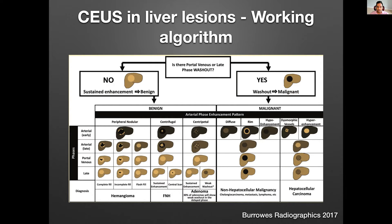For the benign branch — no portal venous or late washout — you then assess the enhancement pattern across arterial, late arterial, portal venous, and late phases. Peripheral nodular discontinuous enhancement is a hemangioma pattern. Centrifugal enhancement (center outward) is more suggestive of FNH — you'll see sustained enhancement and may see a central scar that doesn't fully enhance. Centripetal enhancement (outside inward) is more suggestive of an adenoma. Adenomas usually show sustained enhancement, but up to 30% could show weak washout, making it harder to differentiate from HCC.